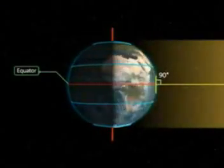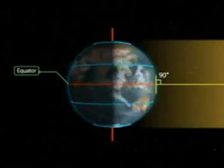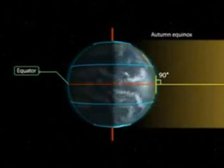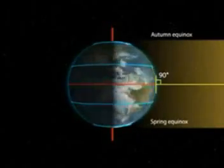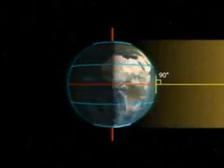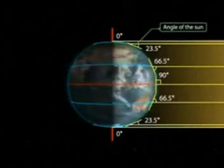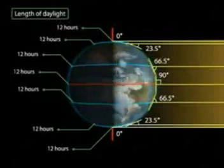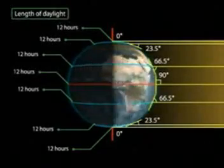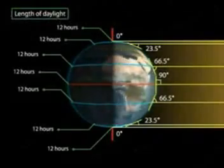Autumn equinox. On the 22nd or 23rd of September, the overhead Sun is over the equator again. The equator receives the largest amount of solar radiation. On this day, the northern hemisphere is in the autumn equinox, while the southern hemisphere is in the spring equinox. The angle of the Sun decreases towards the poles. On this day, the two hemispheres receive a similar amount of solar radiation, and the length of day and night is the same at all places on the Earth.